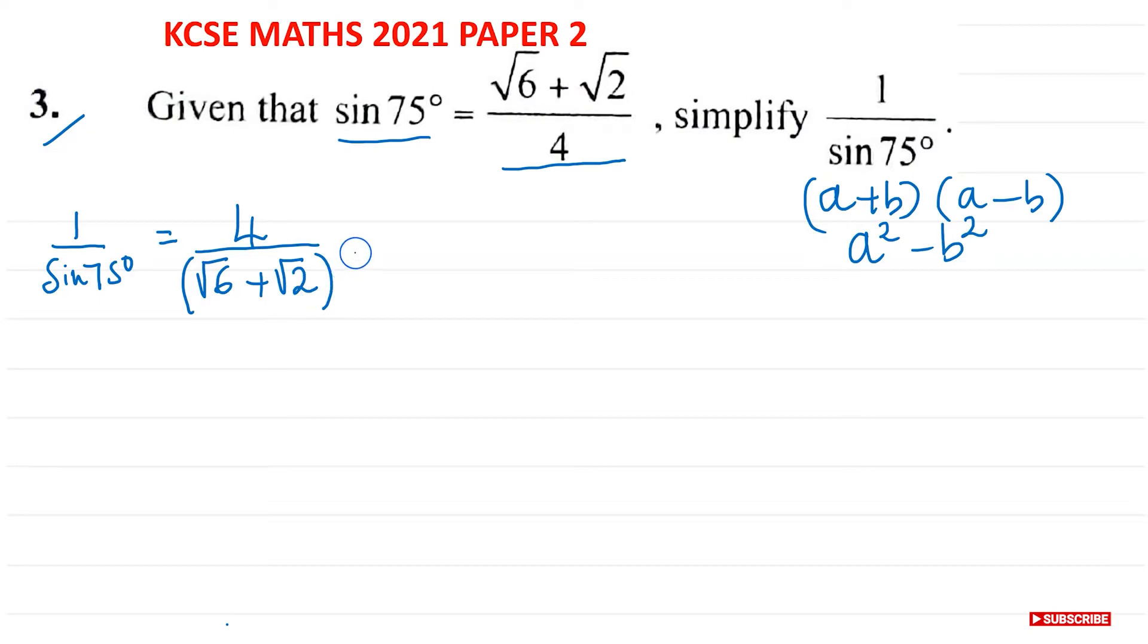In this case here, by writing root 6, but we take the opposite sign of what is here. So we're going to write minus root 2. Now, we have changed our fraction, so what we need to do now is balance it by doing the same on the top. So root 6 minus root 2 here.